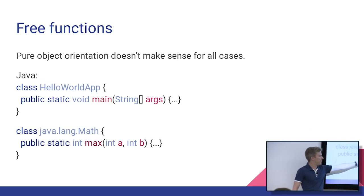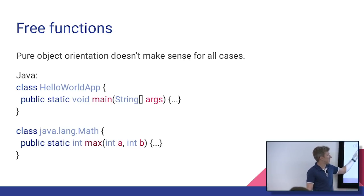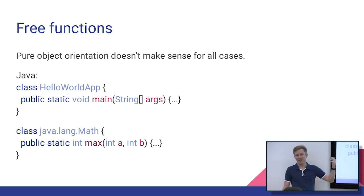Same with this. The max function to get two integers, that doesn't have to be a class at all. You pass in two integers, it returns the max of the two. This has nothing to do with the class. So really here, the class is just a namespace. So this is an example of where pure object orientation isn't really perfect for all situations.